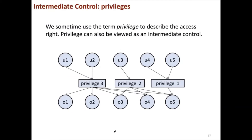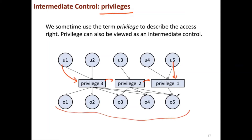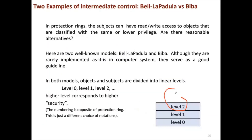In some systems, we use the term privilege level to decide who can access what. With three privilege levels — one, two, three — where three is higher than two and two is higher than one, subjects are given a privilege number. A higher privilege subject can read all objects, while a lower privilege subject can only read objects of the lower privilege levels.